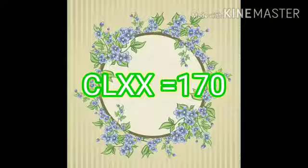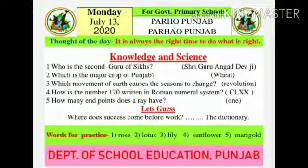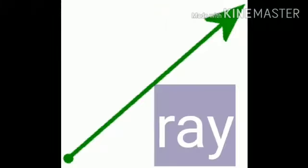The next question is: how many endpoints does a ray have? The answer is 1. You can see here the picture — there is one arrow and there is one dot. The dot means the starting point and the arrow means there is no end point of the ray. So there is only one end point of a ray.